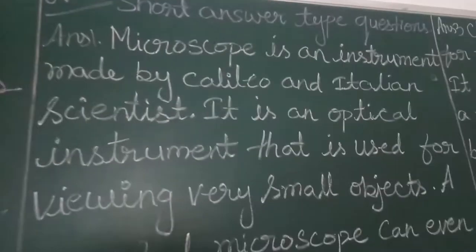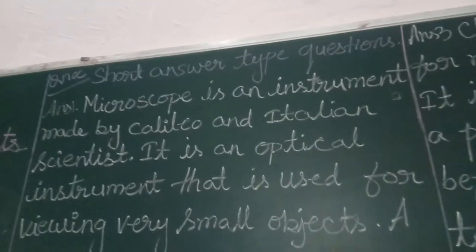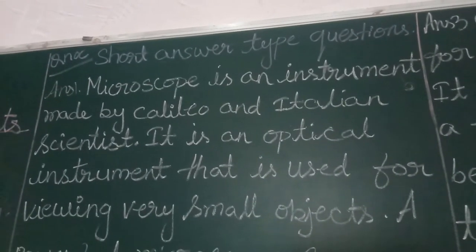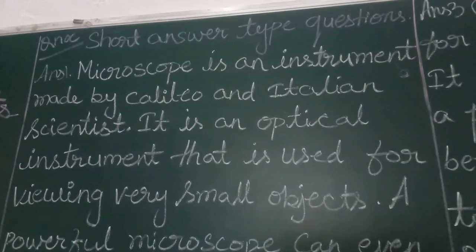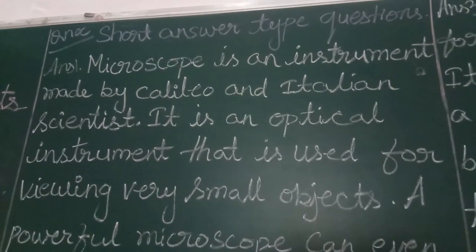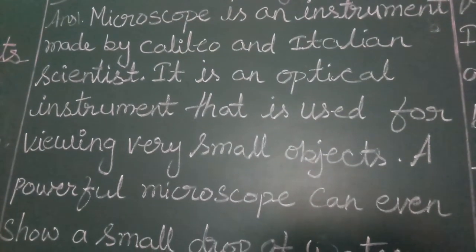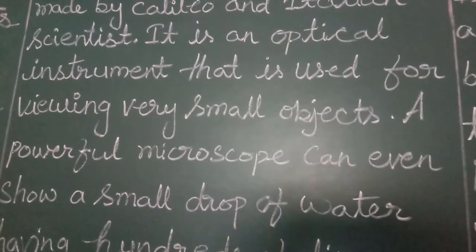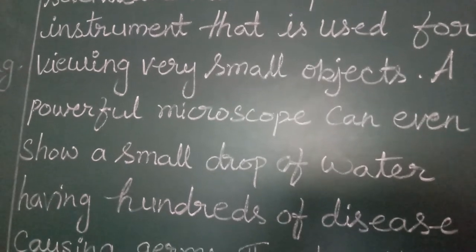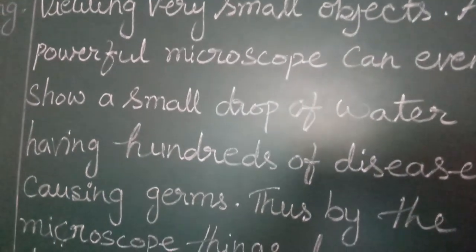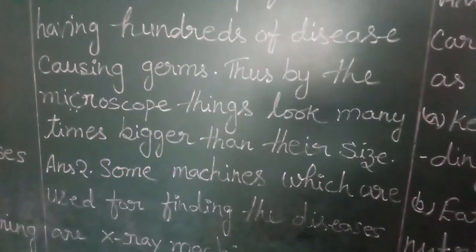Short answer type questions. Question number 1: Give a short note on the microscope. Answer: The microscope is an instrument made by Galileo, an Italian scientist. It is an optical instrument used for viewing very small objects. A powerful microscope can even show small drops of water having hundreds of disease-causing germs.